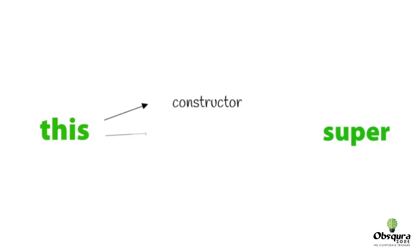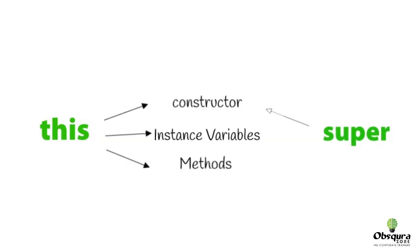There are two more important keywords that come along with inheritance: this and super. The keyword this helps to refer to the current class constructor, instance variables, and methods, whereas super helps to refer to parent class constructors, methods, and variables. To know more, we recommend you to watch the video which we have posted earlier.